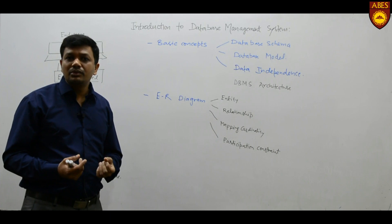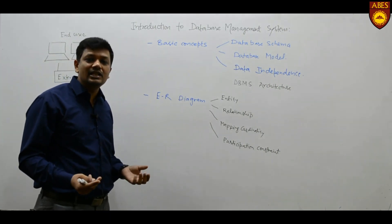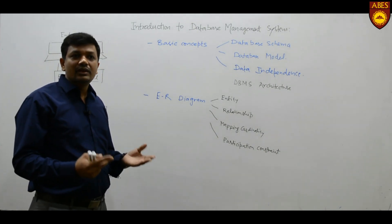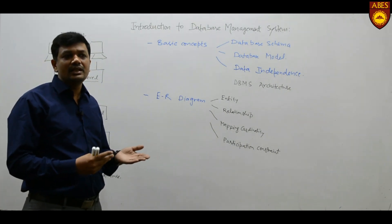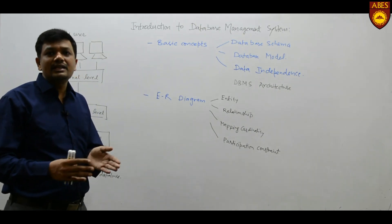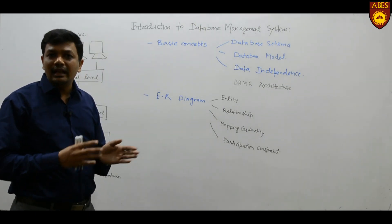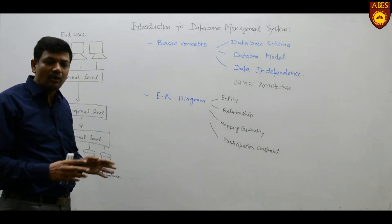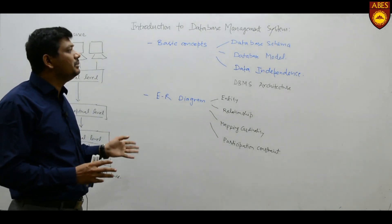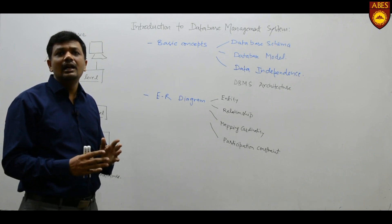So what is a database management system? A database management system is nothing but software which handles all the access to the database. Data is raw facts — things you are collecting. A database is a collection of those related objects or things, and the software which handles all the access and manipulation in the database is known as the DBMS.